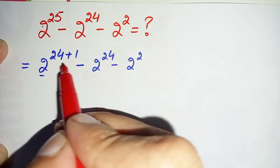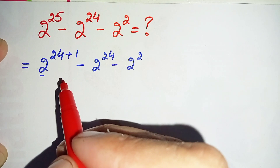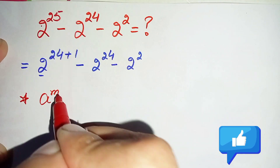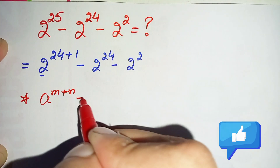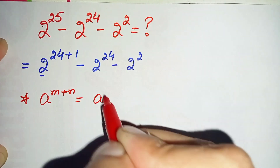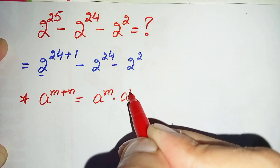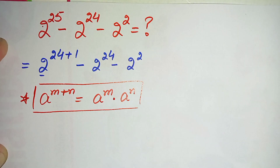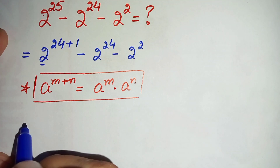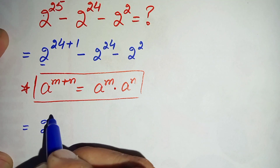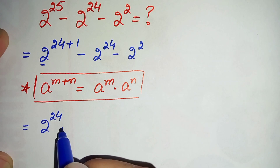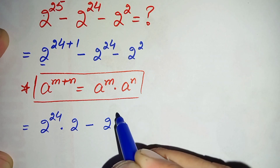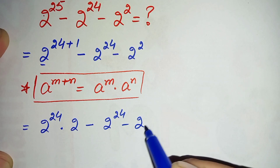In this term 2 raised to power 24 plus 1, we will use an exponential math property: a raised to power m plus n can also be written as a raised to power m times a raised to power n. Using this identity, this equation will become 2 raised to power 24 times 2 raised to power 1, and 2 raised to power 1 is 2, minus 2 raised to power 24, minus 2 raised to power 2.